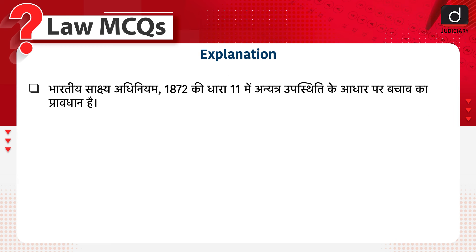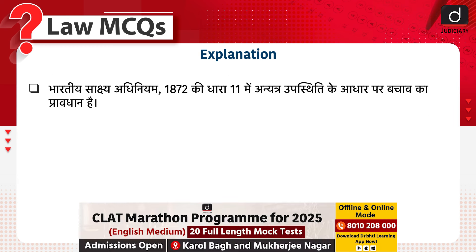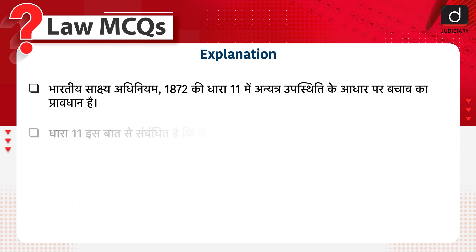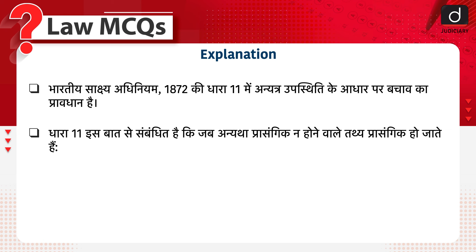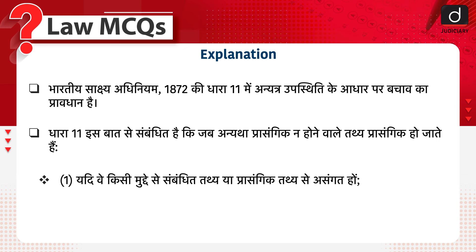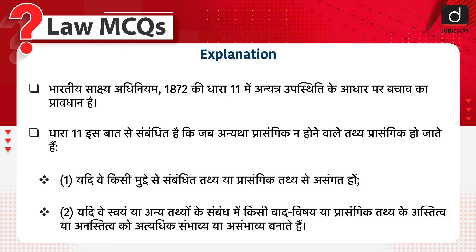भारतीय साक्ष्य अधिनियम 1872 की धारा 11 में अन्यत्र उपस्थिति (Alibi) के आधार पर बचाव का प्रावधान है। धारा 11 इस बात से संबंधित है कि जब अन्यथा प्रासंगिक न होने वाले तथ्य प्रासंगिक हो जाते हैं, यदि वे किसी मुद्दे से संबंधित तथ्य या प्रासंगिक तथ्य से असंगत हों, या यदि वे स्वयं या अन्य तथ्यों के संबंध में किसी वाद-विषय या प्रासंगिक तथ्य के अस्तित्व या अनस्तित्व को अत्यधिक संभाव्य या असंभाव्य मानते हों।